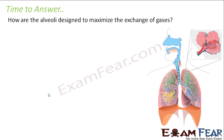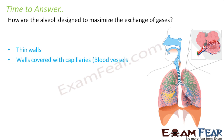How are the alveoli designed to maximize the exchange of gases? In the respiratory system, the actual gaseous exchange takes place in the alveoli. They have thin walls so that diffusion of gases from alveoli to the capillaries becomes easier — these balloon-shaped structures are the alveoli, and the red and blue structures are the capillaries. The walls are covered with and connected to a network of capillaries, so it becomes very easy to maximize the exchange of gases.